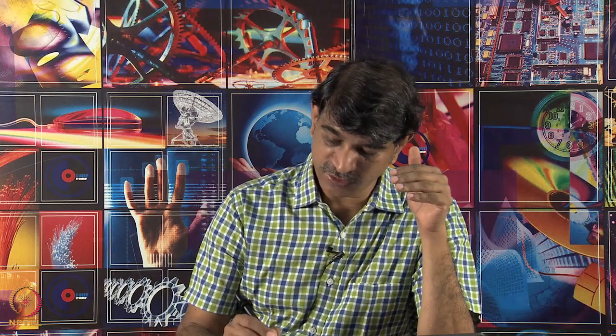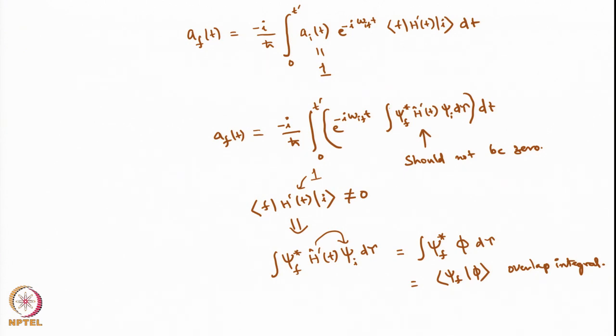You need a time-dependent operator that allows the projection of the initial state onto the final state. That is the most important point in spectroscopy: the perturbation operator must be able to take the initial function and project it onto the final function. An identity operator will never cause transitions from initial state i to final state f; you need something more than that.